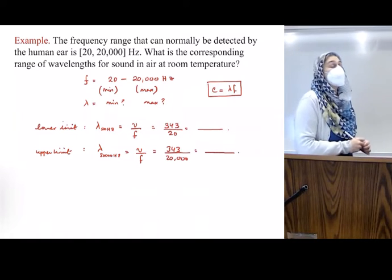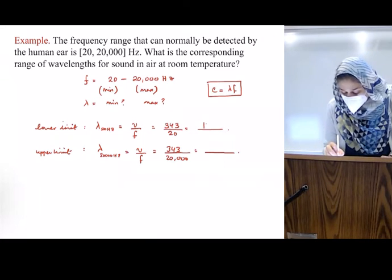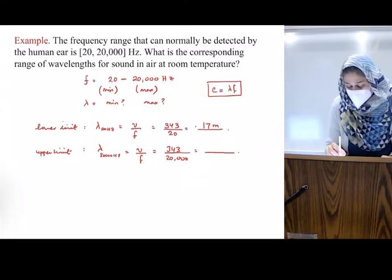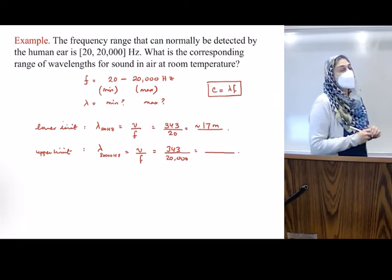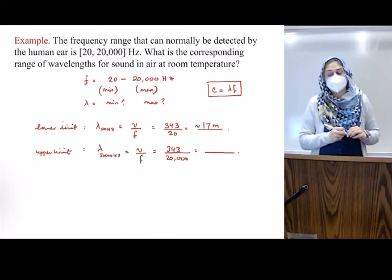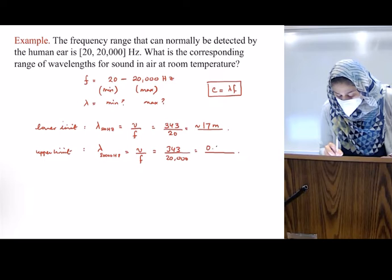Can someone give me answers for this? 17? Approximately? And then what about for the other one, 343 divided by 20,000? 0.01. 0.017.